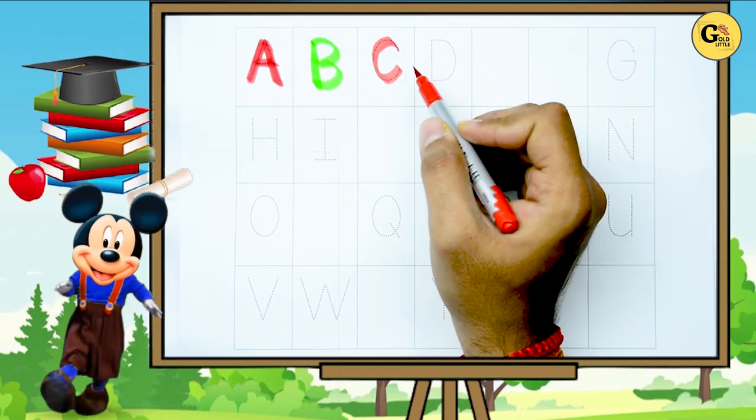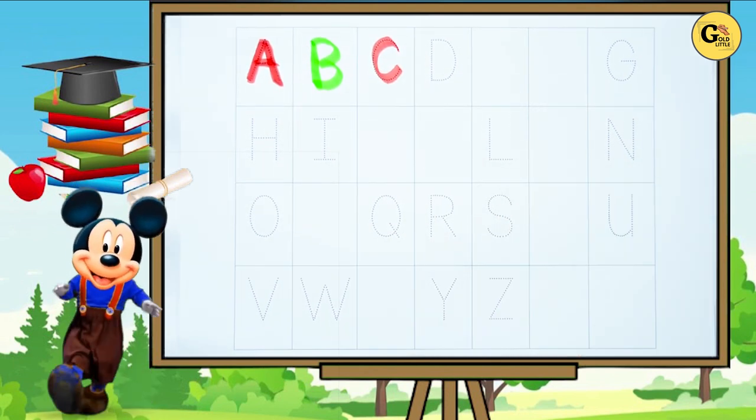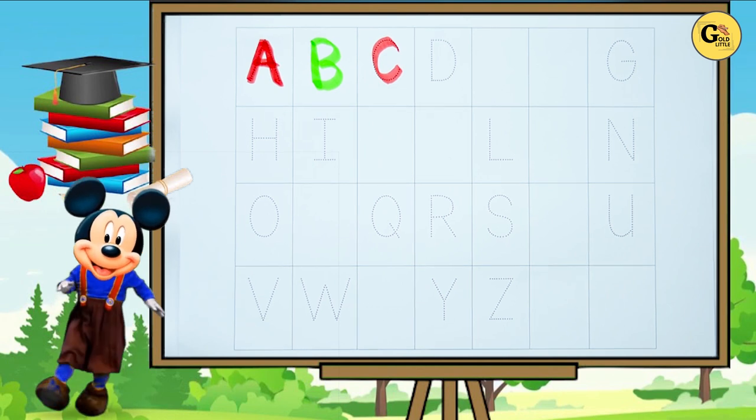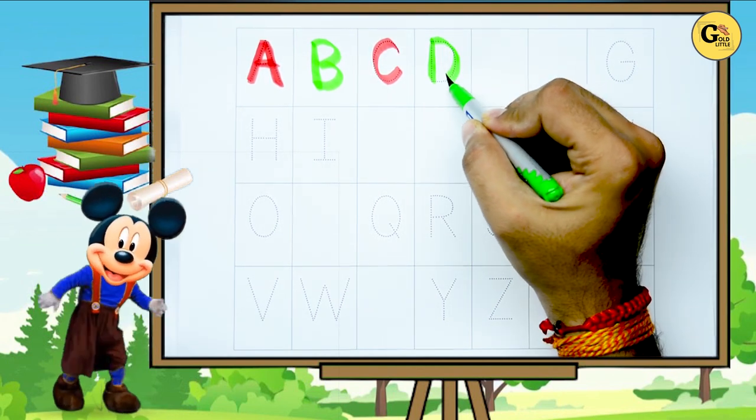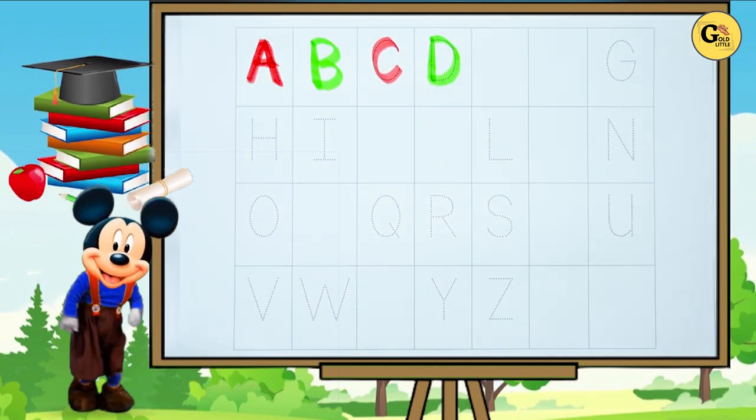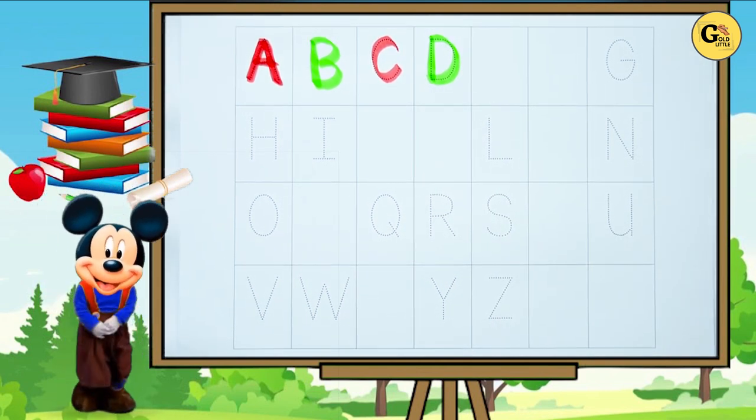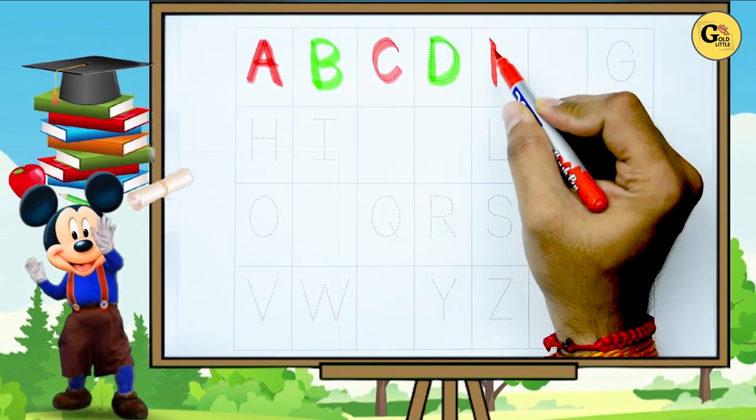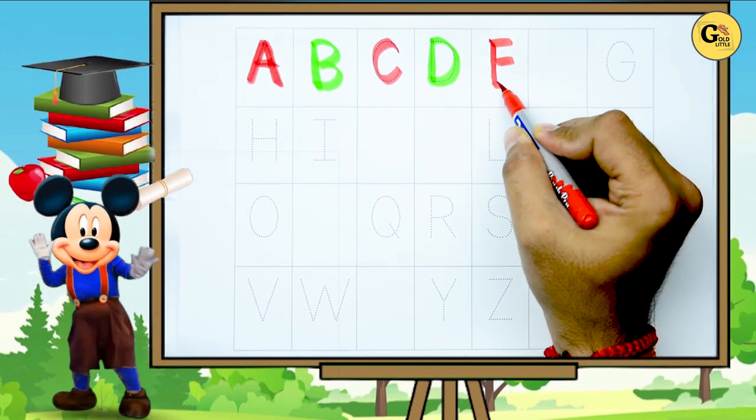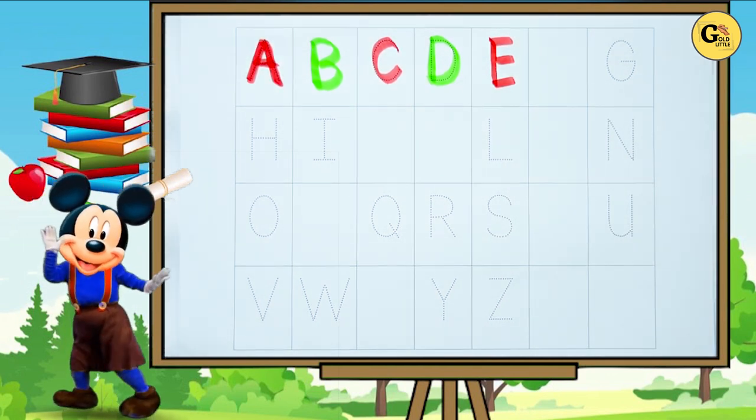C. C for cat. D. Green color D. D for dog. Tell me, what is after D? A B C D E. It's E. E for elephant.